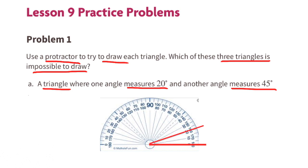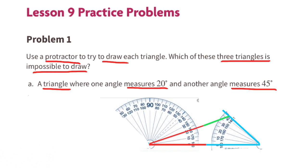Now let's draw the next angle that measures 45 degrees. Next we can slide this angle over and connect them to form the triangle that has one angle that measures 20 degrees and the other angle that measures 45 degrees.